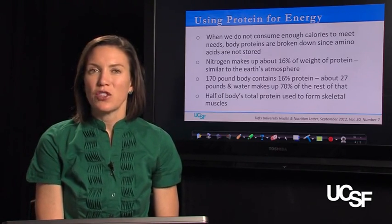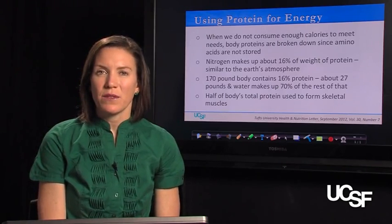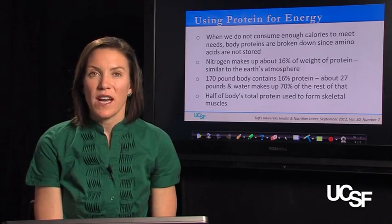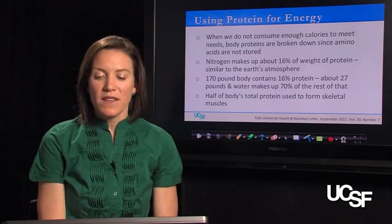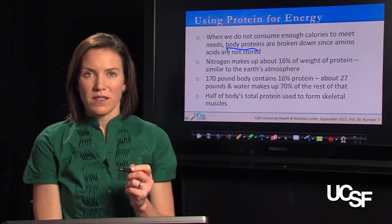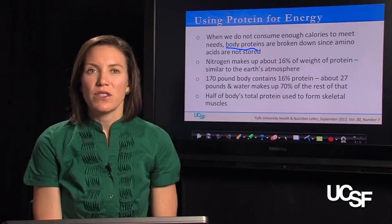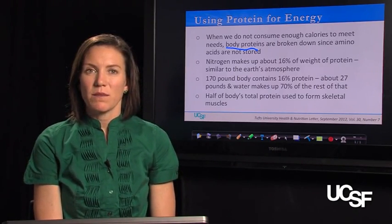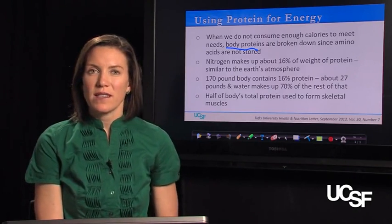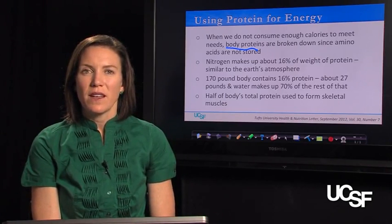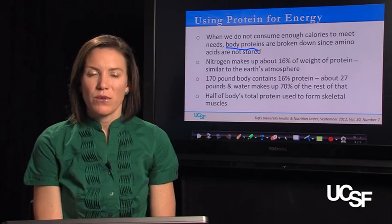In a perfect situation when you're healthy, you get the majority of your calories from carbohydrates. But if, for whatever reason, perhaps you were on a very restrictive diet and didn't get enough calories to meet your body's needs, your body would break down its body proteins. That would happen because you don't actually store amino acids — there is no storage mechanism for amino acids. You store extra carbohydrate as glycogen, and if your body's glycogen stores get full, then you start storing it as fat. If you have excessive amounts of protein in your diet, your body can't store those amino acids.